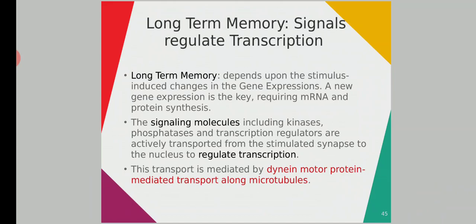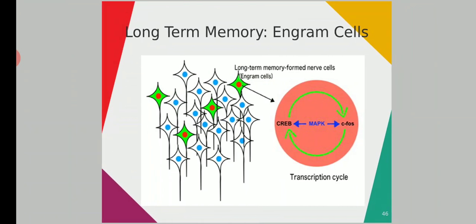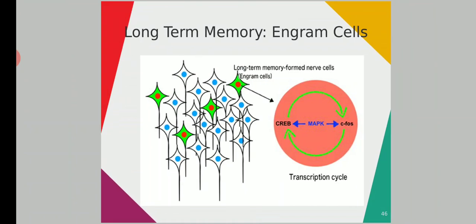Microtubules are long, tube-like structures made of alpha-beta tubulin subunits attached to each other, and they are highly flexible. This transport is mediated by dynein motor protein along the microtubules. Because of gene transcription, there is a definite change in components inside the nerve cells, and these transformed nerve cells are called engram cells.